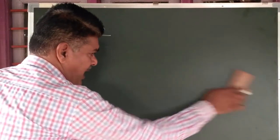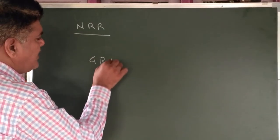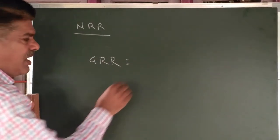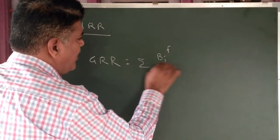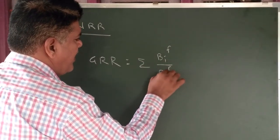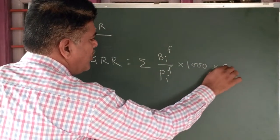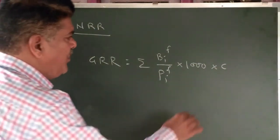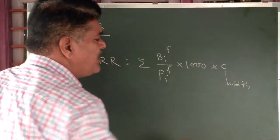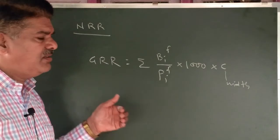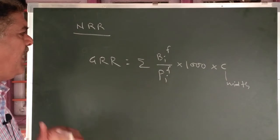If we consider GRR, the formula is: GRR = summation of (Bif divided by Pif) into 1000, multiplied by C, where C is the class width. The class width refers to age intervals from 15 to 19, 20 to 24, up to 45 to 49.